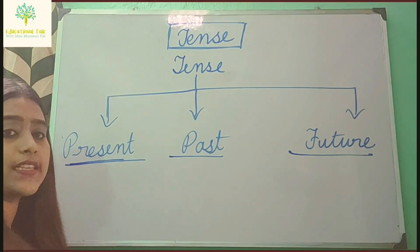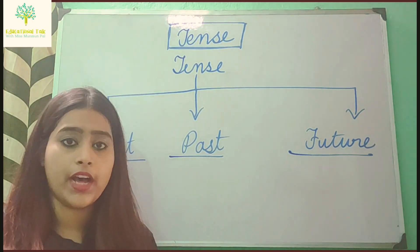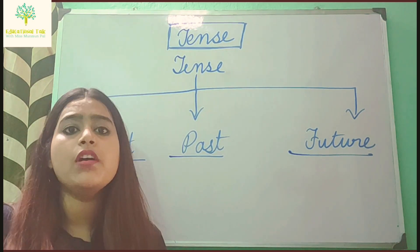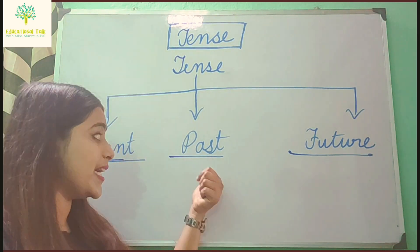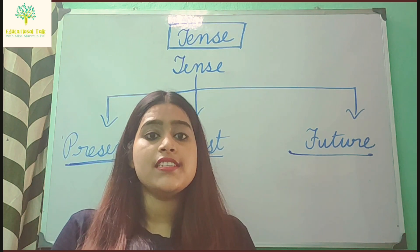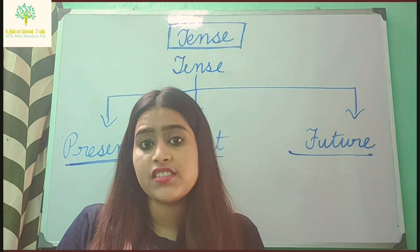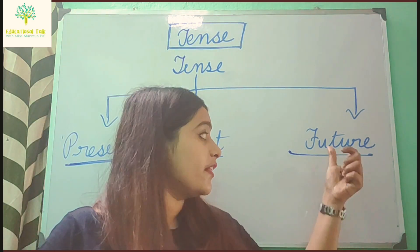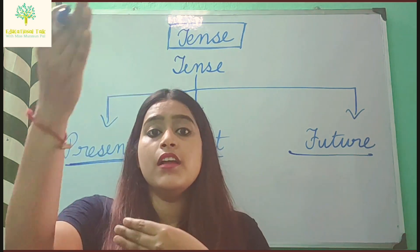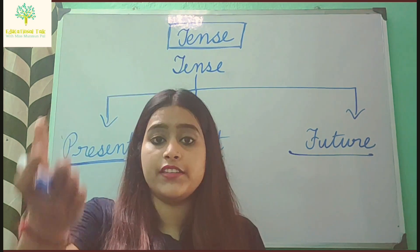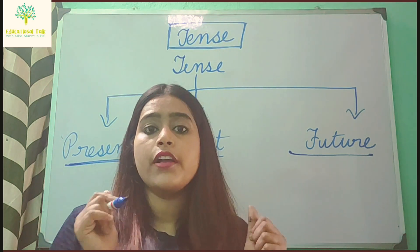Present tense tells us what is going on now — it generally happens regularly. Past tense tells us the actions that took place in the past. And future tense tells us the actions that will happen further, meaning tomorrow or in the future.